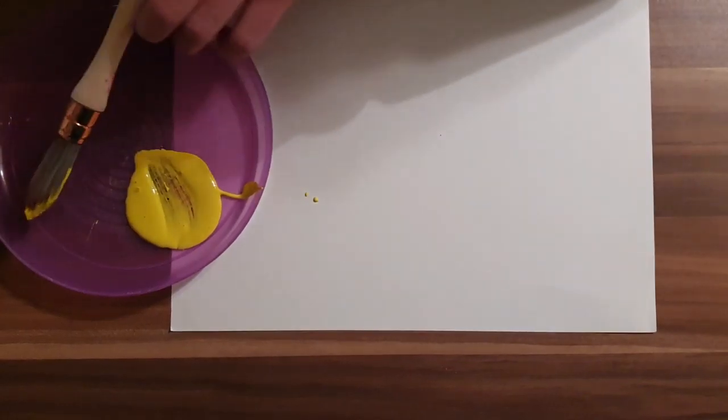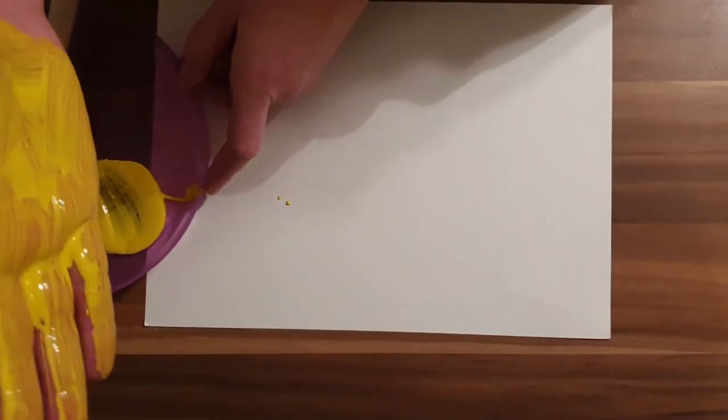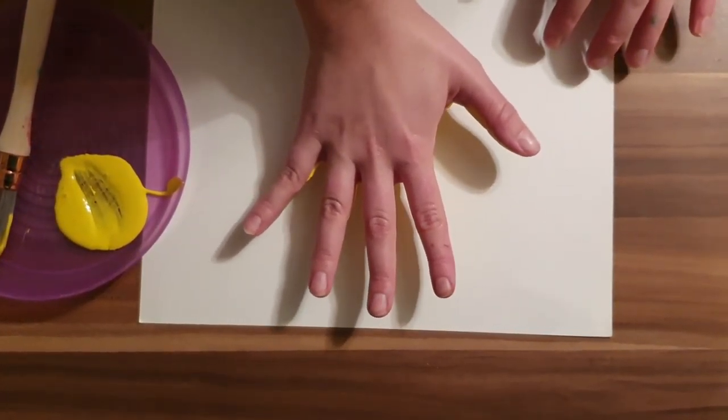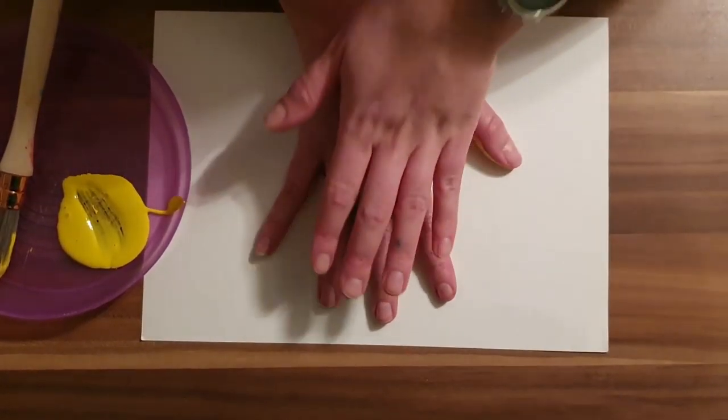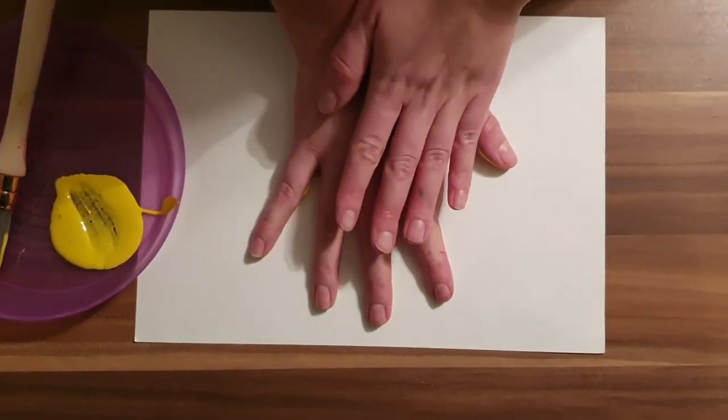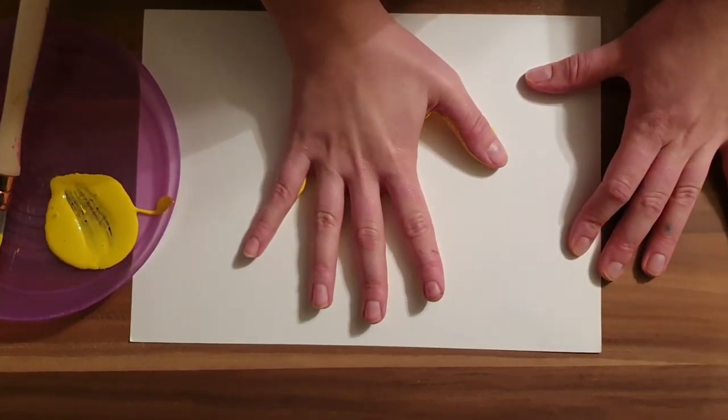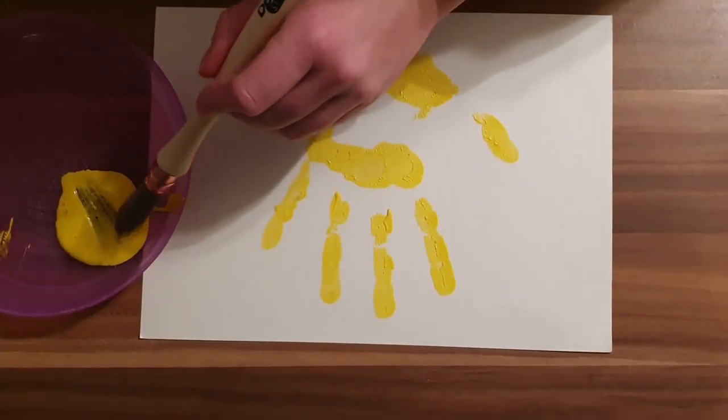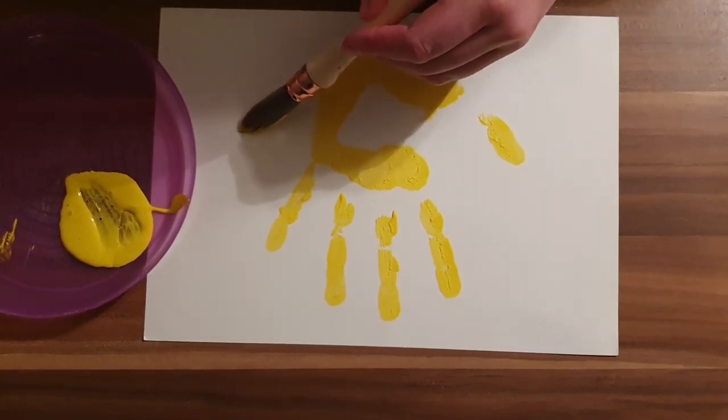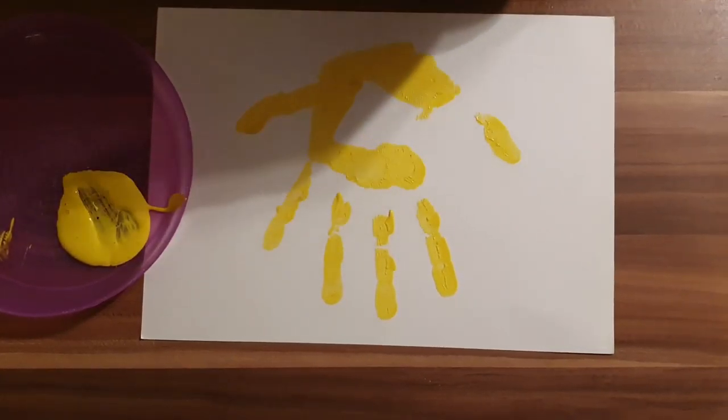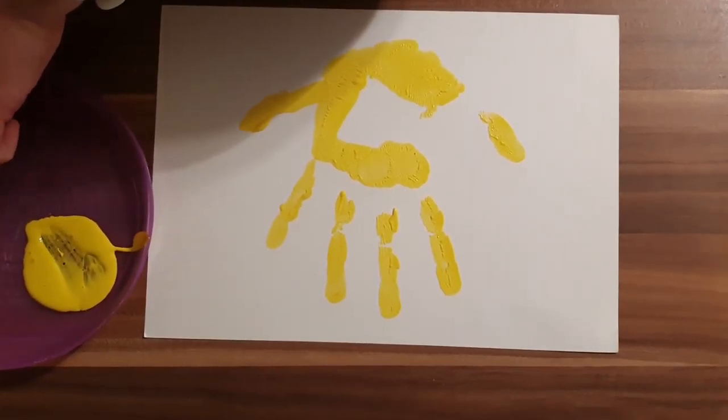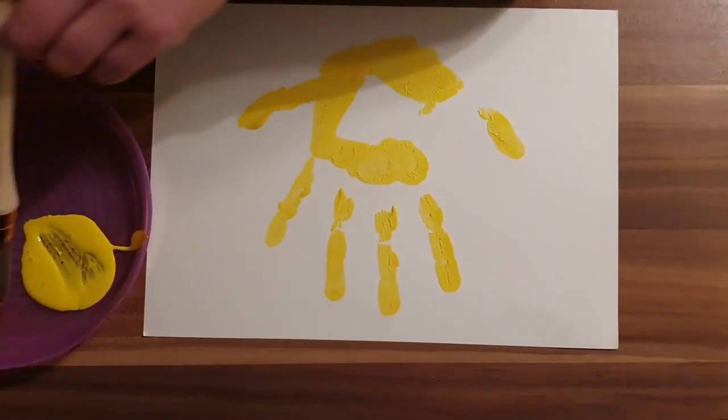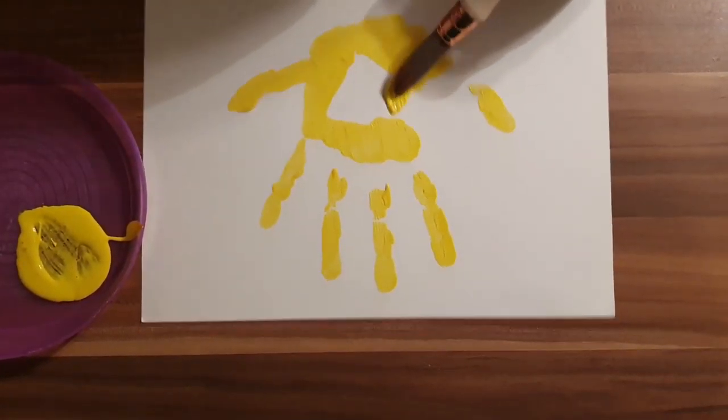The next thing you're going to do when your hand is covered is put it down on the page like this, press it down, lift it up, and you're going to get your paintbrush and add a little tail here for the giraffe. Paint in this part here for the giraffe's body.